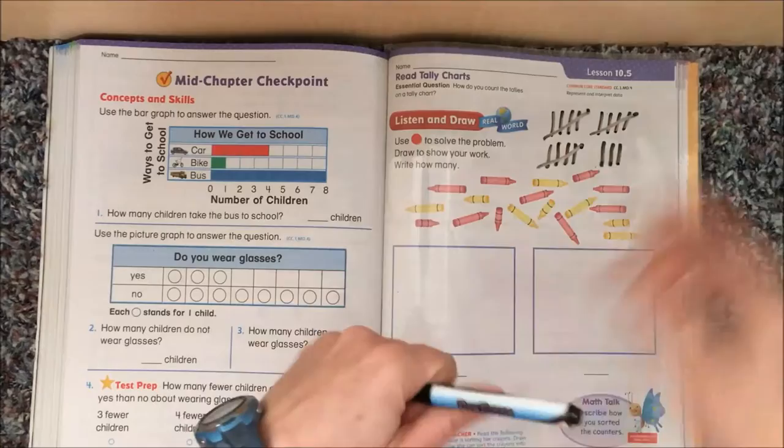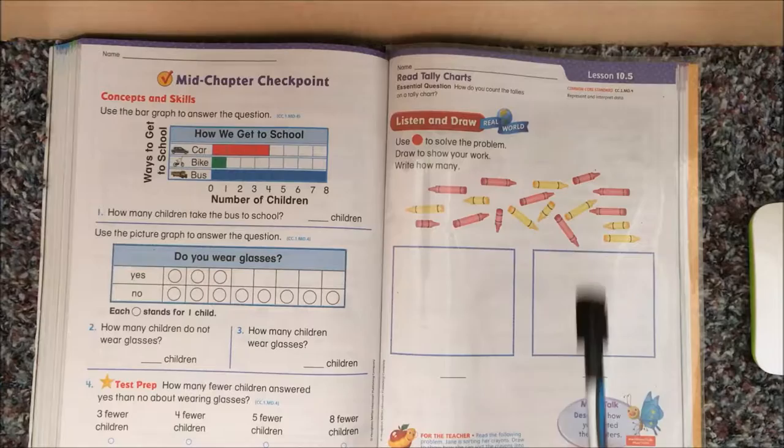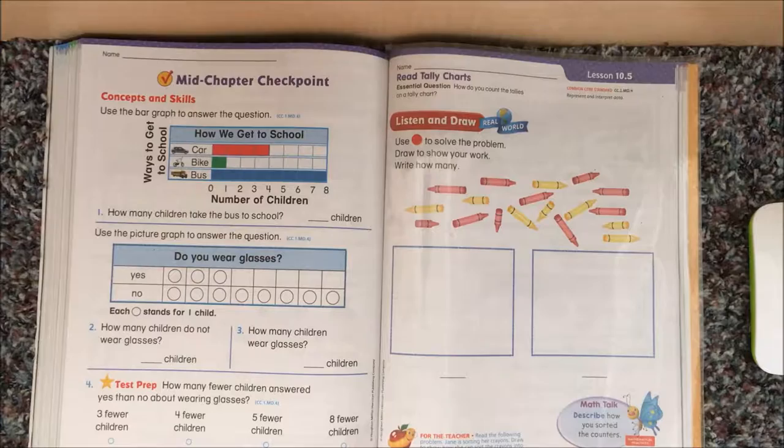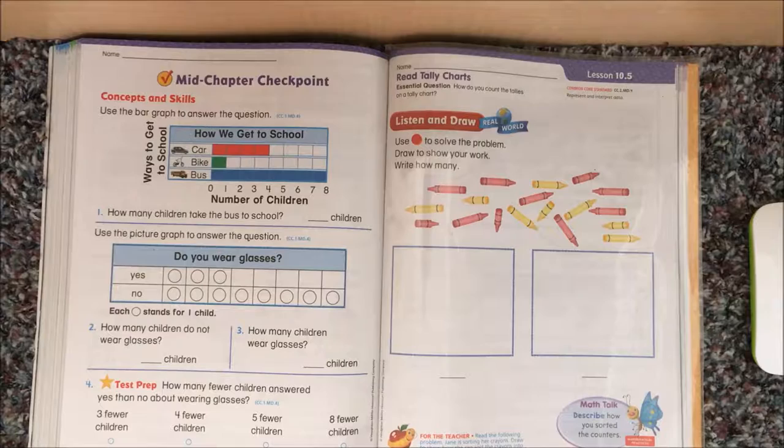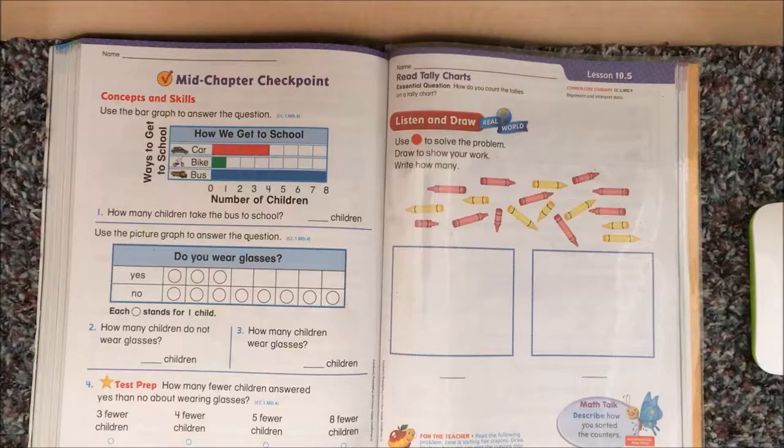Now, we're going to sort. Well, let's see what the problem says. Jane is sorting her crayons. Draw to show how she can sort the crayons into two groups. How are the crayons different from each other and like each other? The most obvious answer, of course, is that there are red crayons and yellow crayons.